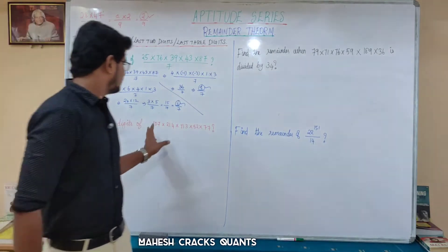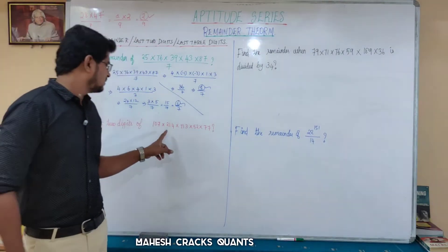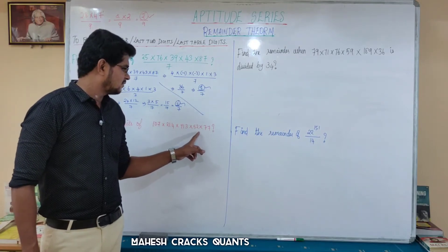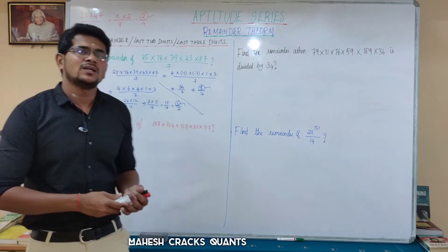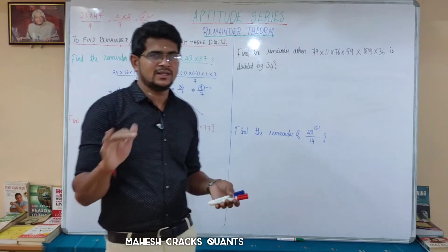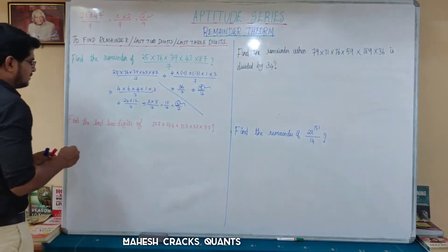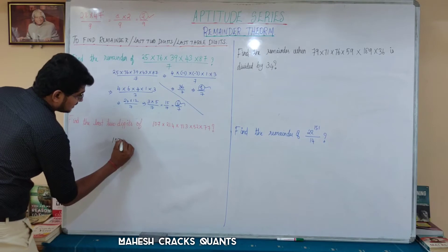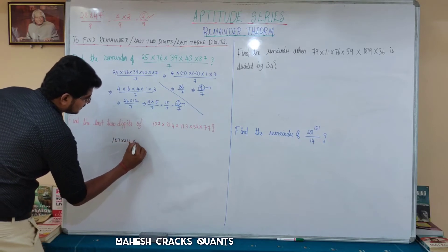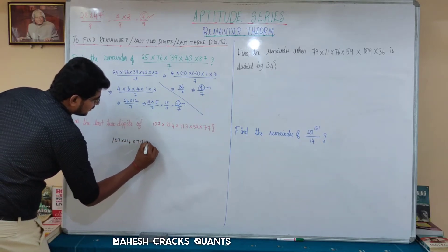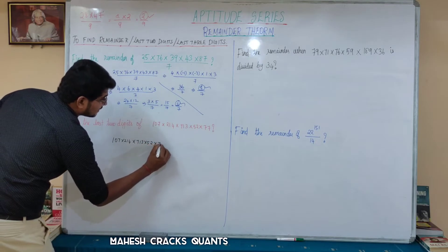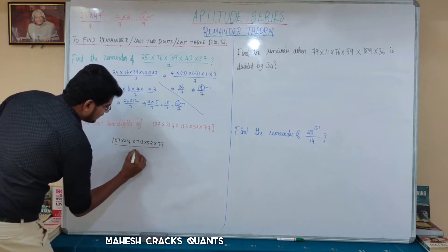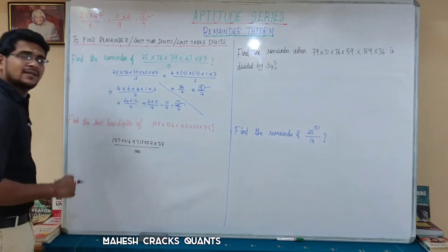Next sum: Find the last two digits of the given expression: 107 into 214 into 713 into 52 into 77. For last two digits, the denominator is 100 — that's fixed. We divide by 100 and find the remainder.